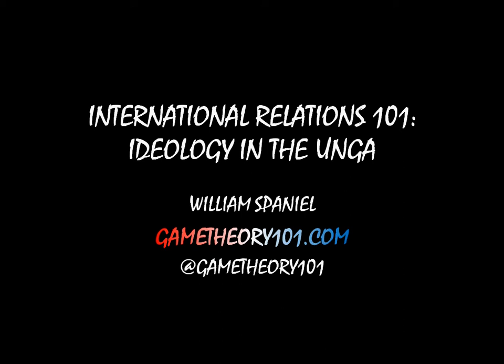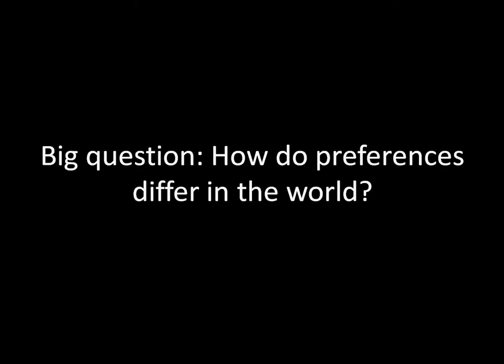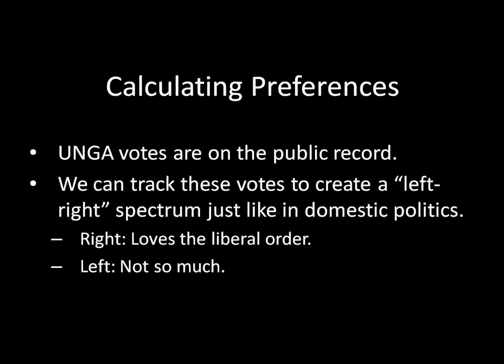But that's not to say that the General Assembly isn't useful for a different reason. The General Assembly is a bigger body — it contains every country in the United Nations, and they all get a vote. But the key difference is that General Assembly votes are not binding, unlike Security Council votes. Nevertheless, that will still help us answer the big question for this lecture: how do preferences differ in the world? The reason is because UN General Assembly votes are on the public record, so we can look at all of these votes and use them to calculate preferences for states.